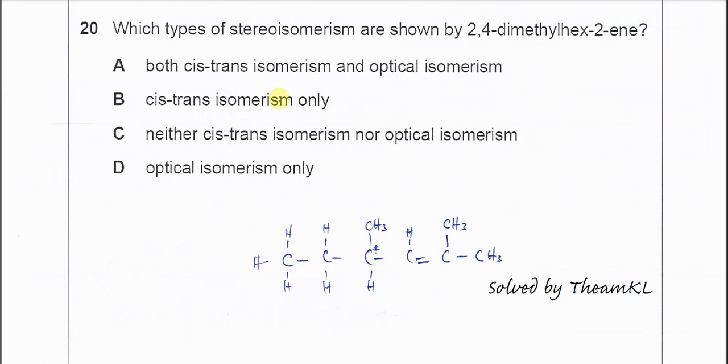So this question, you need to identify which types of stereoisomerism are shown by 2,4-dimethyl-hex-2-ene. The most important thing is you must know the structure of this compound.